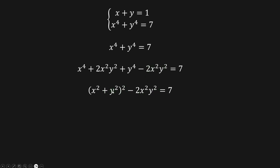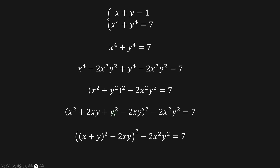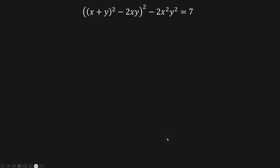So completing the square inside here, this one is x-squared plus 2xy plus y-squared, and then minus 2xy. So this one here is a perfect square, which is x-squared plus y-squared all squared, and this inner part is x plus y squared minus 2xy.